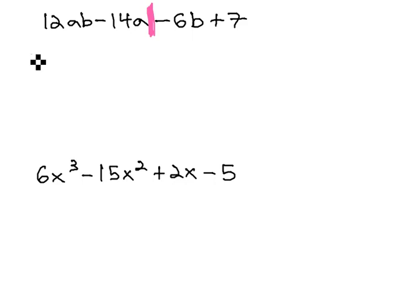Of 12 and 14, it's going to be 2, and they also have an a in common. Factoring out 2a, we're left with 6b minus 7.